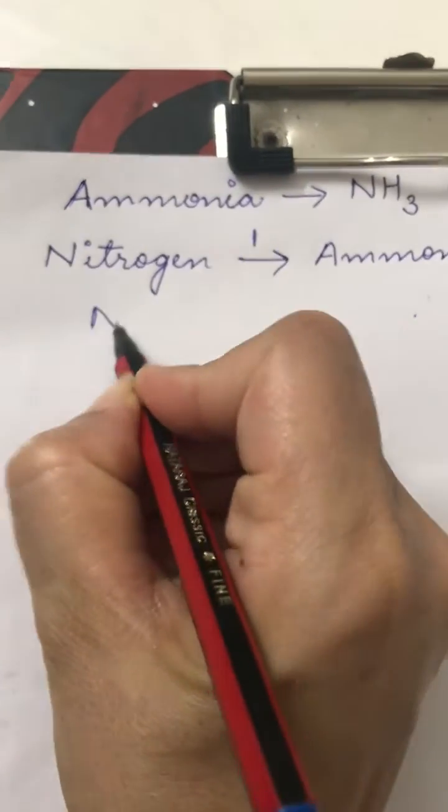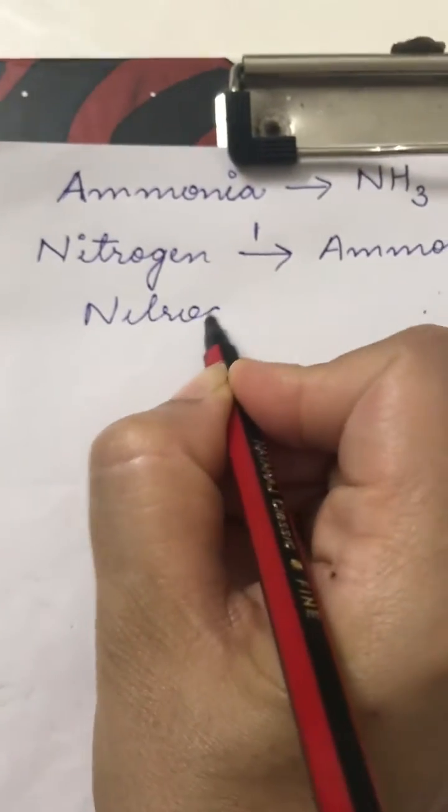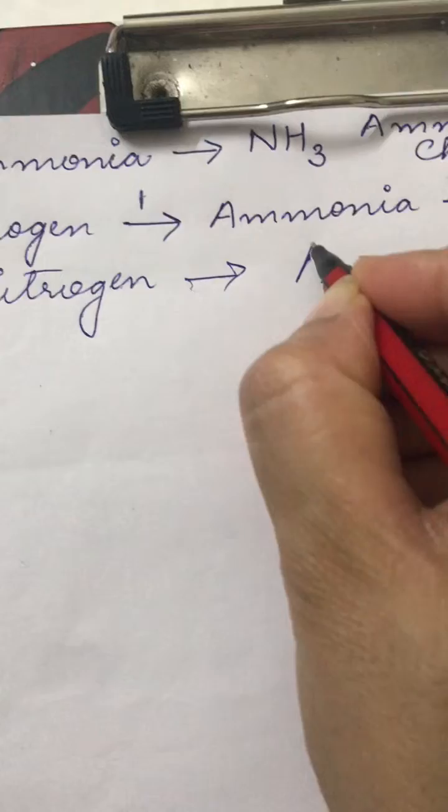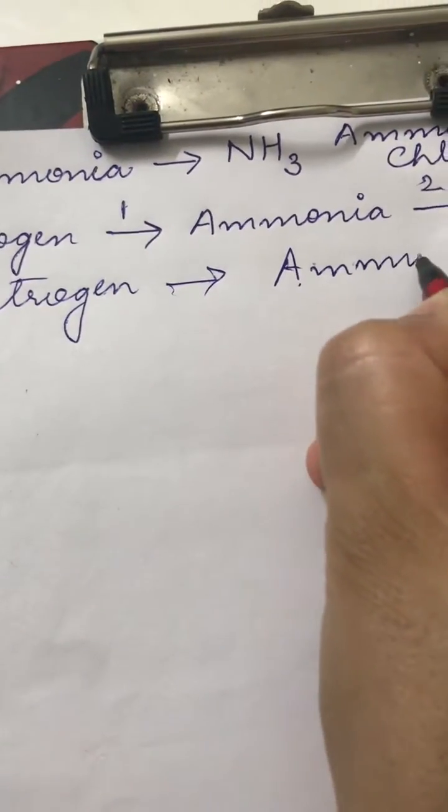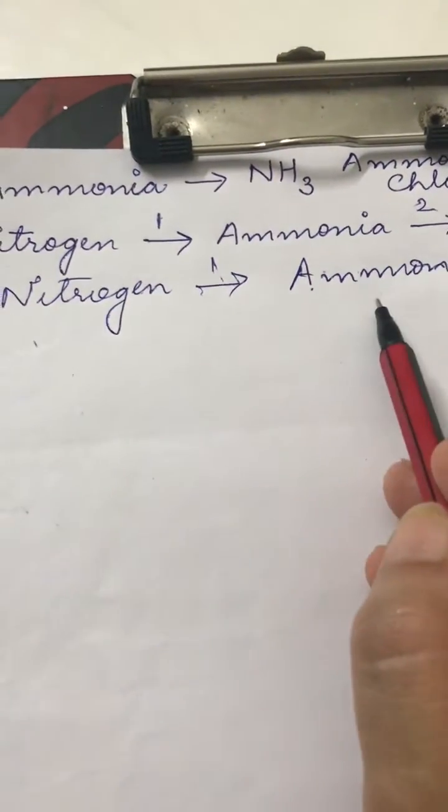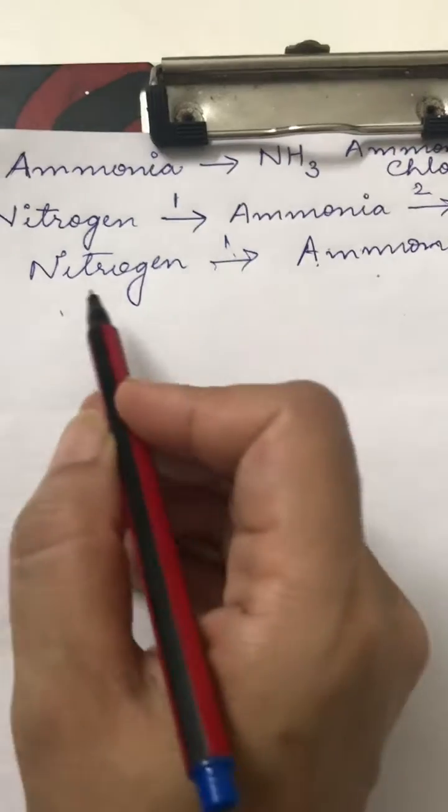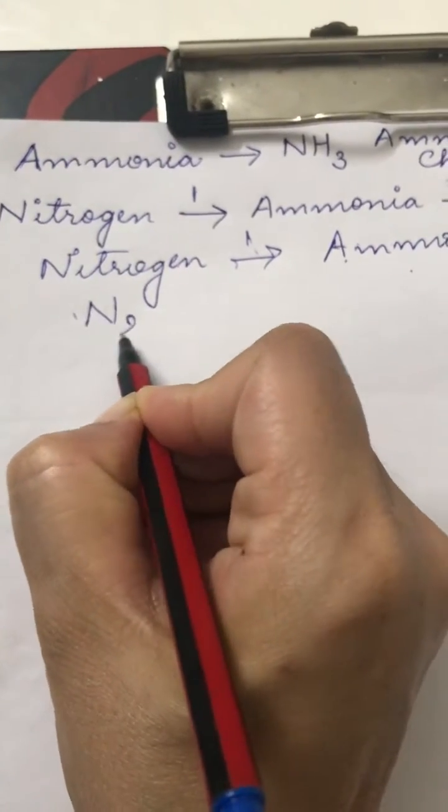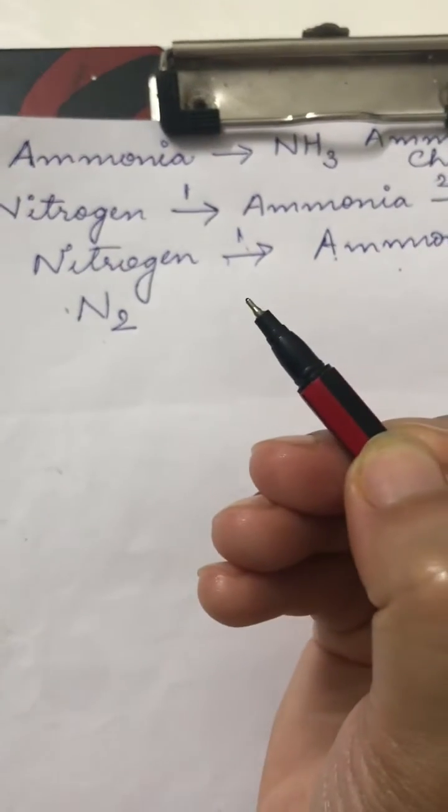We will write it in this form. That means we are first writing nitrogen to ammonia. This is going to be our first equation. Equation number one. Now, it is not possible to solve an equation in word equation form; we always convert it to the molecular form. You all know nitrogen is a gas. We always write it in molecular form N2. We never write it as N.